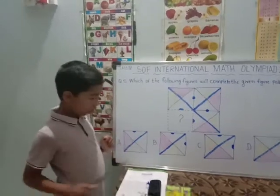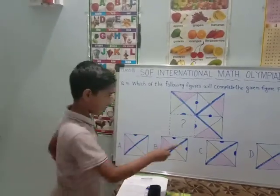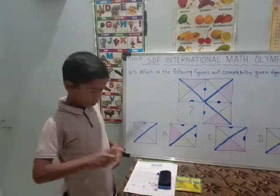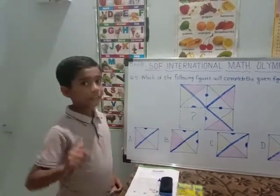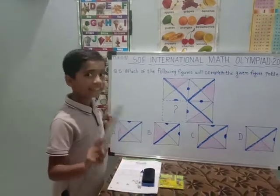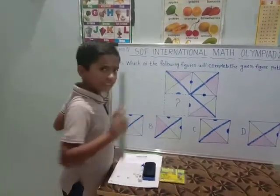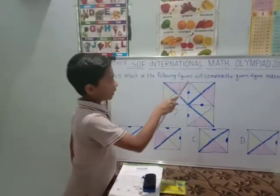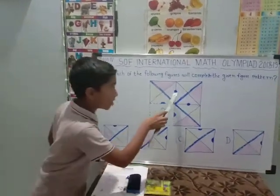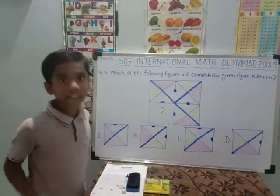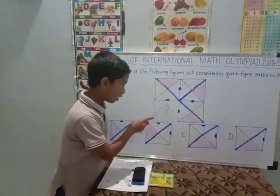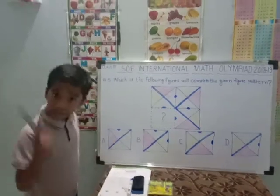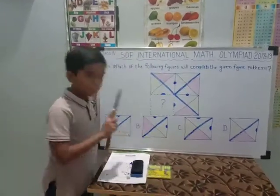Now we will see which option matches this sequence: yellow, yellow, pink, pink. These two options could be correct. One more thing — here it is a semicircle, here also a semicircle, and here both are circles because both semicircles are joined to each other. So here also two semicircles should be there. Only one is there in option B, but option B matches. That's why B would be the answer.